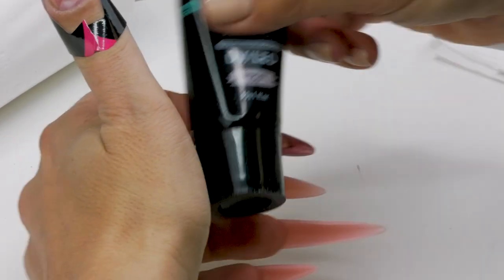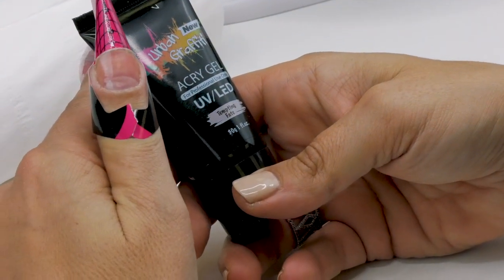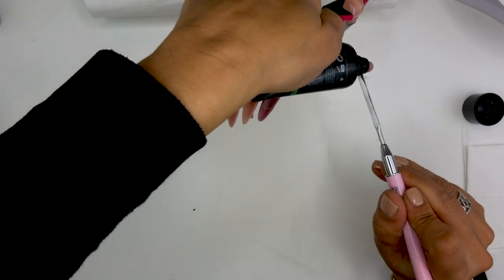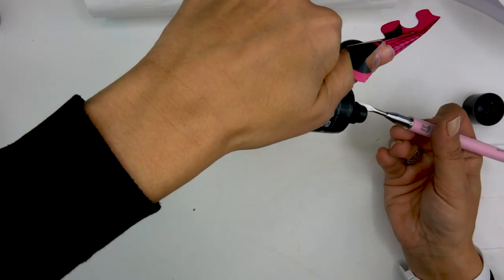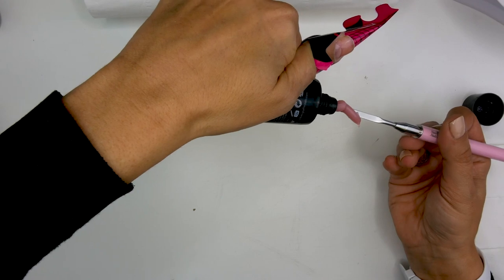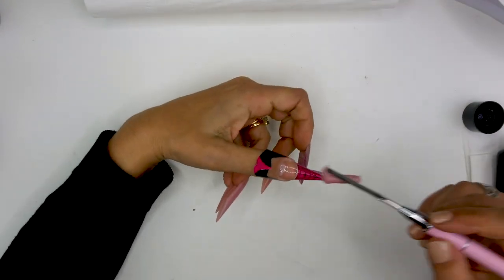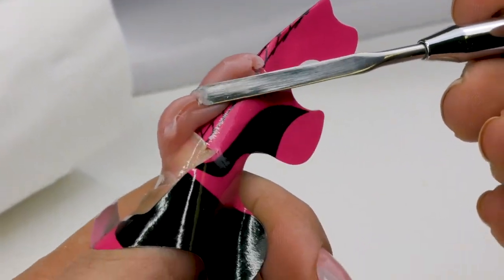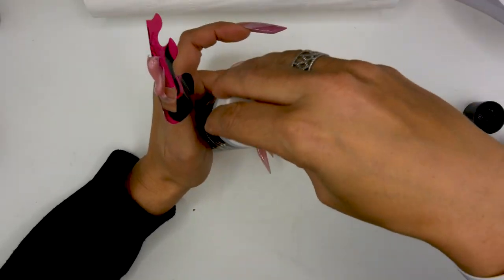So now I'm going to be working with the Tempting Faith Acry Gel. I've got this color on my other nail. And with my spatula, I'm going to place the product at the top of the nail. And I will use some Gel Residue Wipe-off Solution.